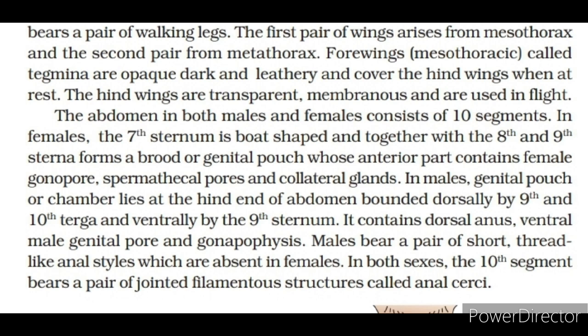The abdomen in both males and females consists of ten segments. In females, the seventh sternum is boat-shaped and together with the eighth and ninth sterna forms a brood or genital pouch whose anterior part contains the female gonopore, spermathecal pores and collateral glands. In males, the genital pouch lies at the hind end of the abdomen, bounded dorsally by the ninth and tenth terga and ventrally by the ninth sternum; it contains the dorsal anus, ventral male genital pore and gonapophysis. Males bear a pair of short thread-like anal styles which are absent in females. In both sexes, the tenth segment bears a pair of jointed filamentous structures called anal cerci.